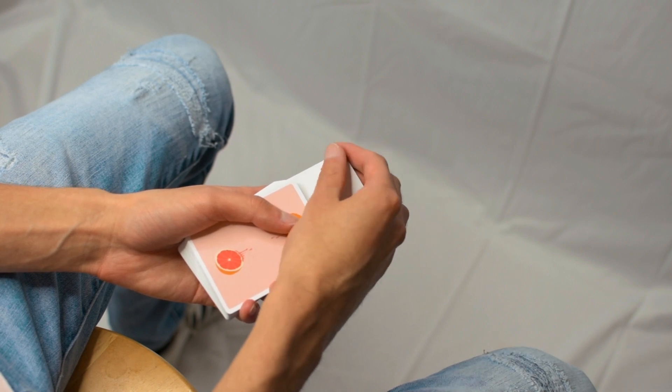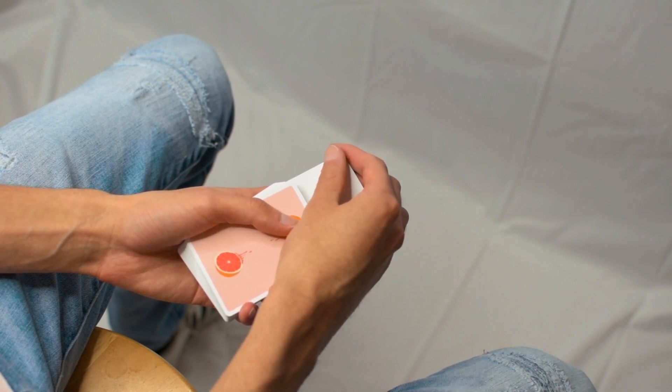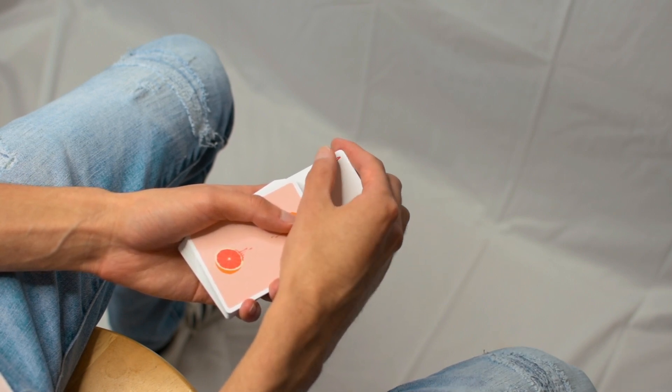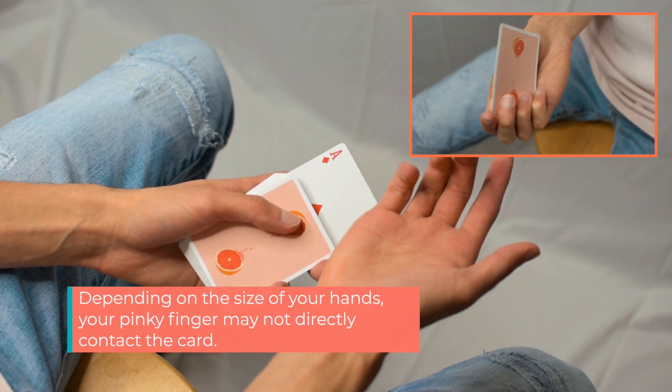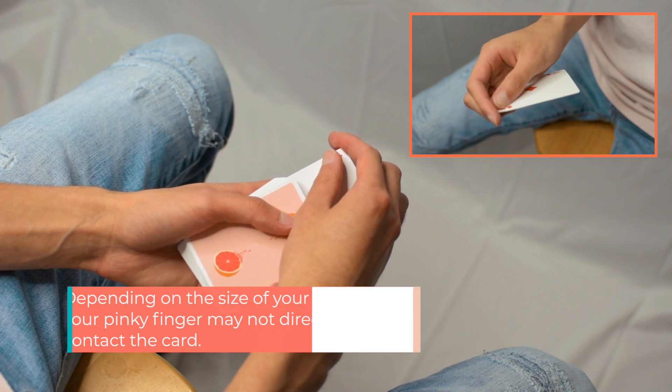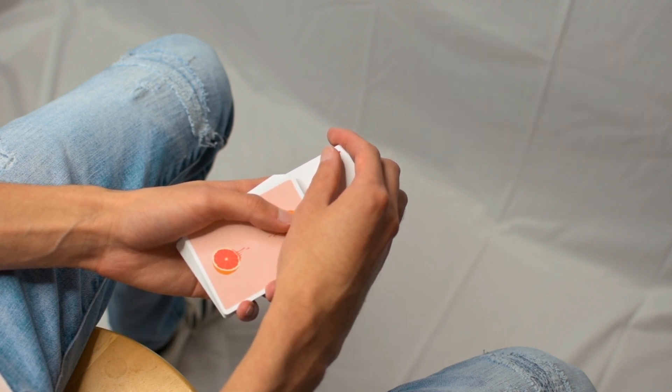With your other hand, place your thumb in the top left corner of the card so that it's covering the pip. Your index finger on the corner of the double, and your other three fingers will be curled underneath. Once you're in this position, you're ready to perform Miyagi.